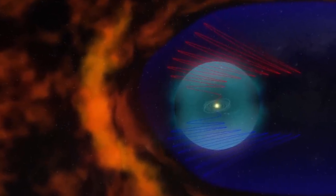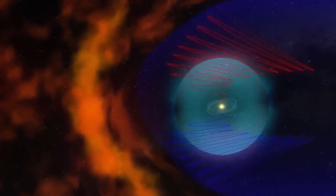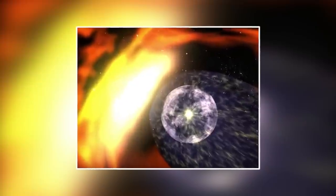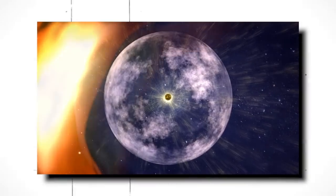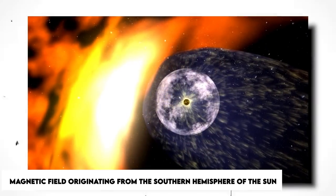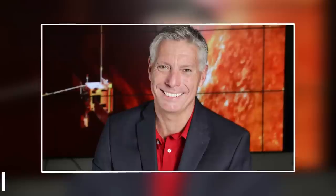Instead, the highway zone seems to allow particles from within the heliosphere to escape into interstellar space while letting particles from the outside flow in. This is because the highway region is formed by a magnetic field originating from the southern hemisphere of the sun.